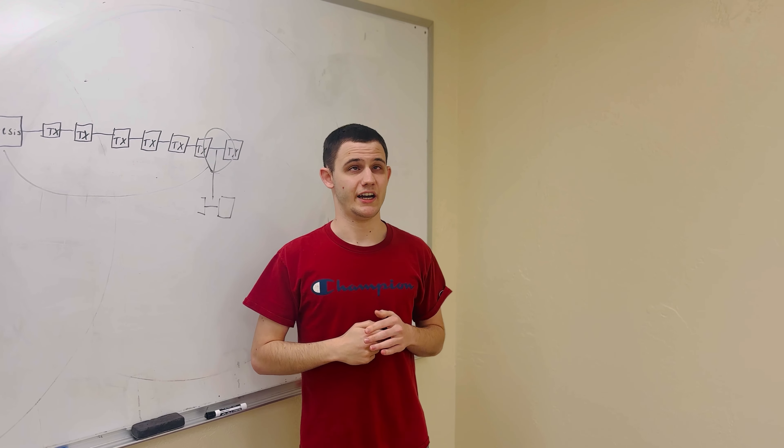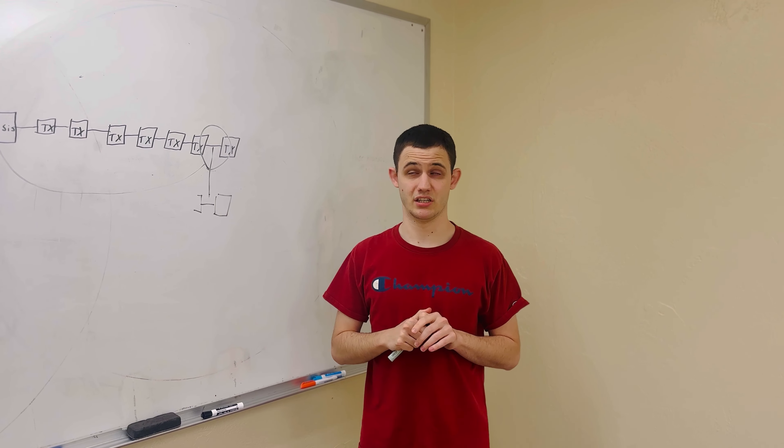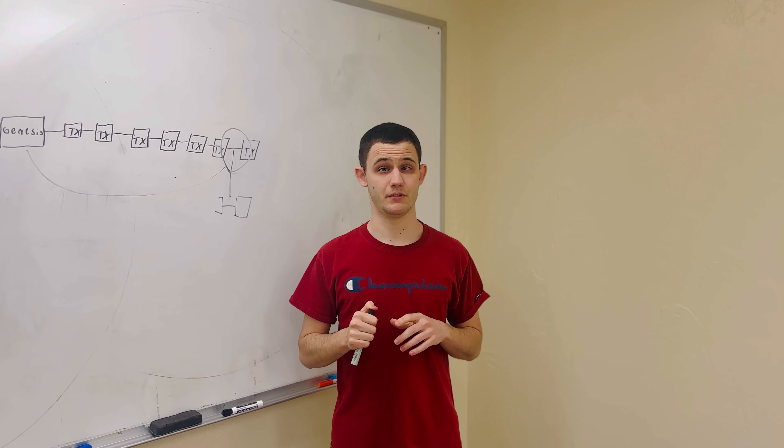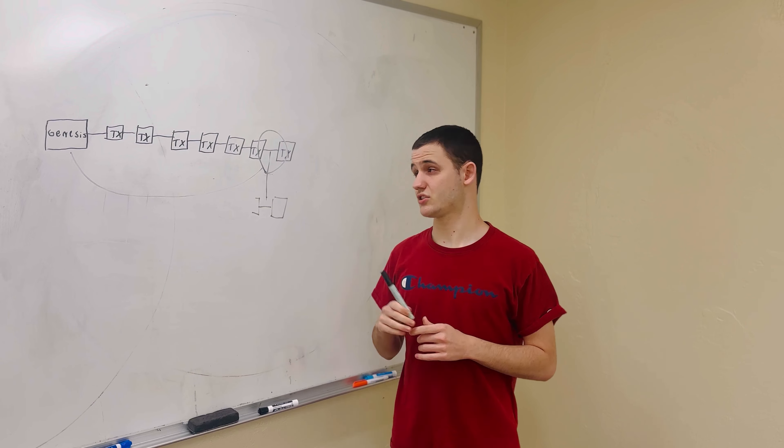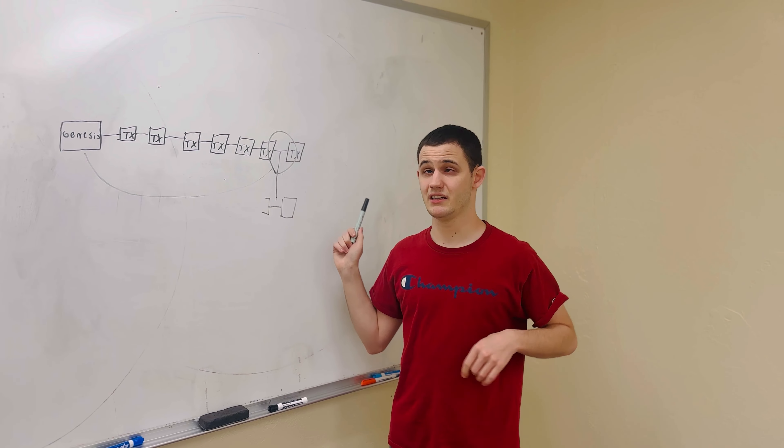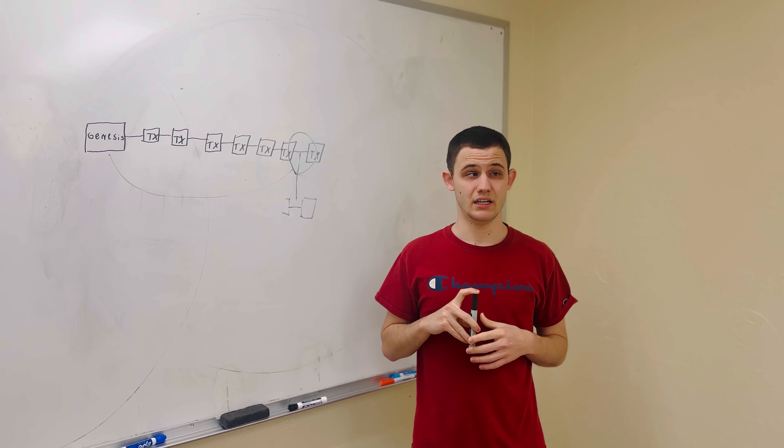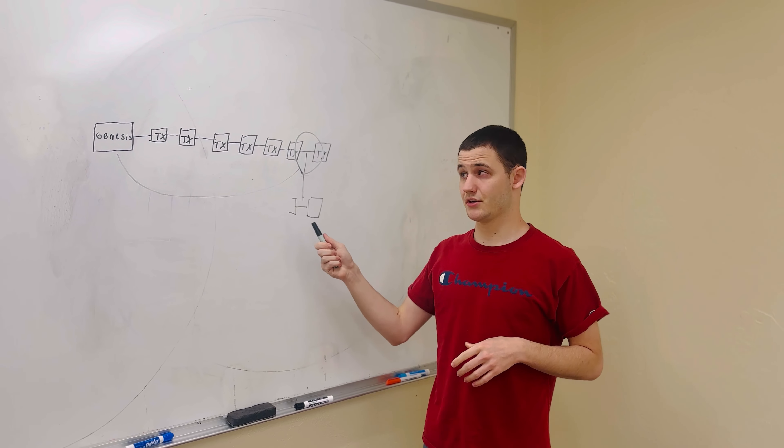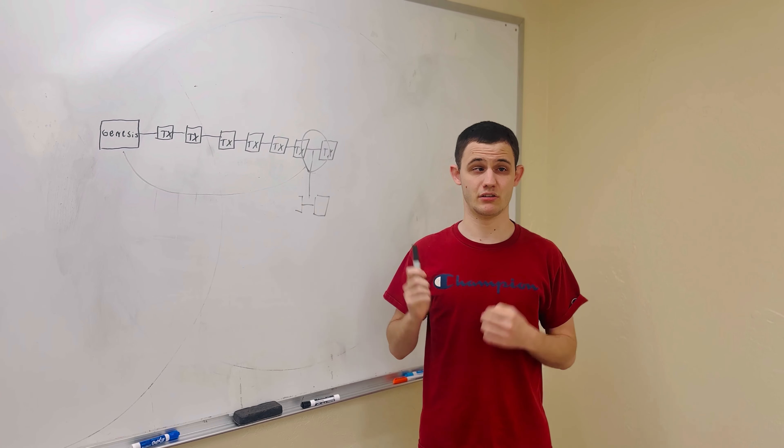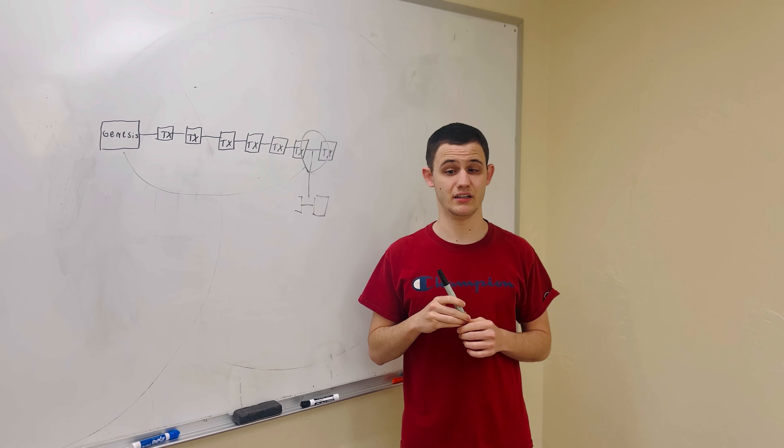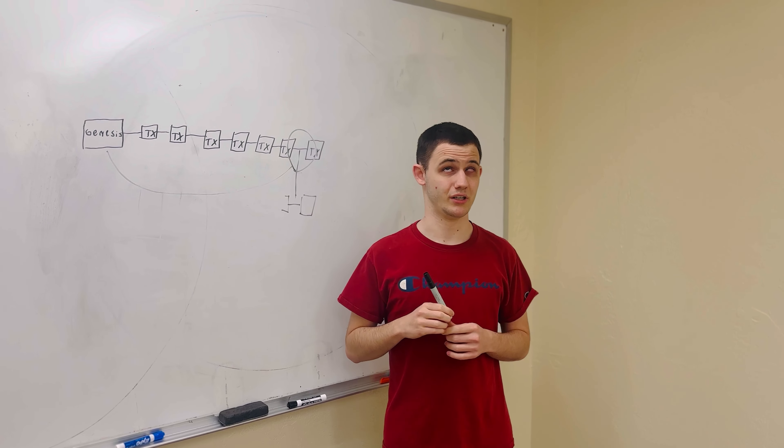So I hope this has been a useful overview of the back to Genesis problem, the various different ways that people could go about solving it. I don't believe, like I said, that script-based solutions are going to provide the ultimate solution. Maybe there are some that are more promising than others for very particular and specialized use cases, but for general tokenization of assets on the BSV blockchain, I don't believe that that's going to work very well.